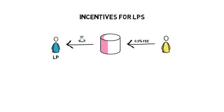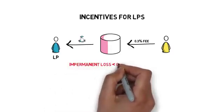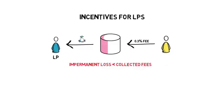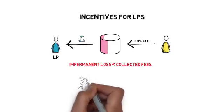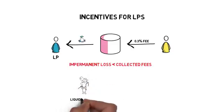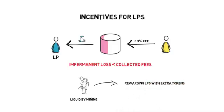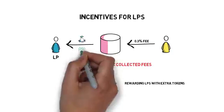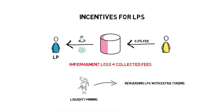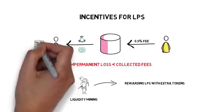This basically means that the LP can still make money even when experiencing impermanent loss, under the condition that impermanent loss is smaller than the collected fees. On top of that, a lot of liquidity pools provide additional incentives for LPs by offering liquidity mining programs. Liquidity mining, in essence, is a way of rewarding LPs with extra tokens for providing liquidity to certain pools or using a protocol. In some cases, the value of the additional tokens can completely negate the value lost by impermanent loss, making providing liquidity highly lucrative.